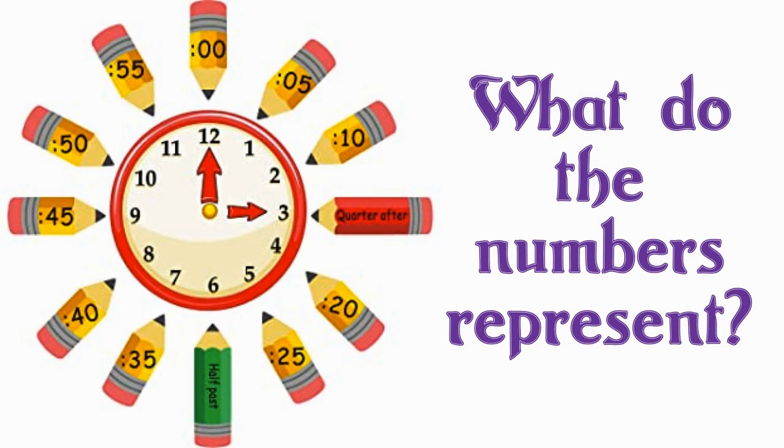But what do the numbers represent? Well, when our short hand points to the numbers 1 through 12, they represent the hour that we are in. If our short hand is pointing in between two numbers, we look at the number that it has already passed as our hour.